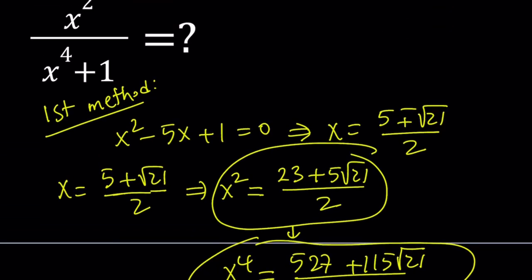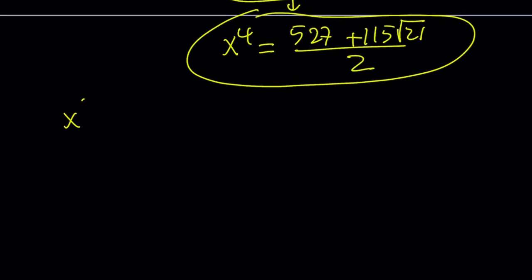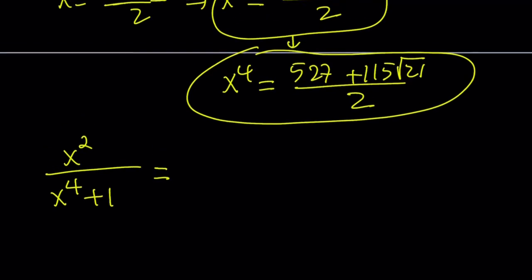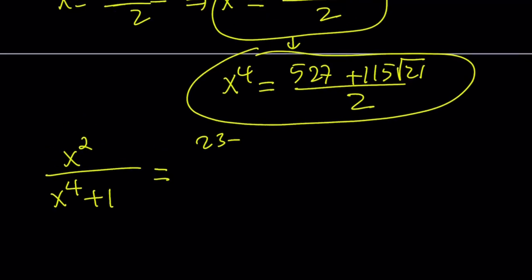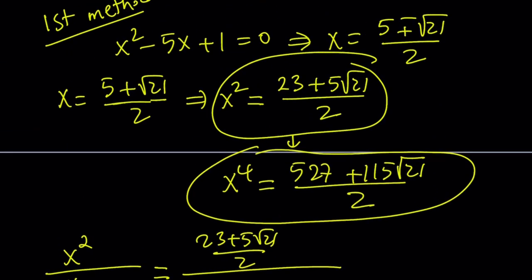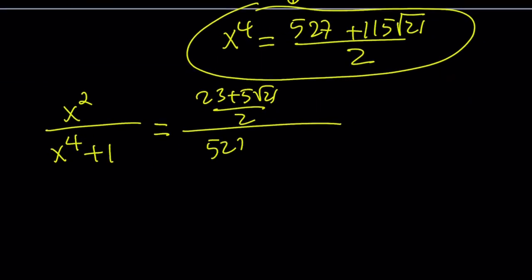Why not substitute, right? We're supposed to evaluate x squared over x to the fourth plus 1 and I'm going to substitute 23 plus 5 root 21 over 2 here and x to the fourth will be replaced with 527 plus 115 root 21 over 2 and then I have to add 1. Now if you make a common denominator, obviously the 2s are going to cancel out.